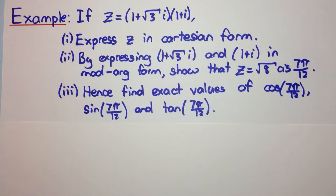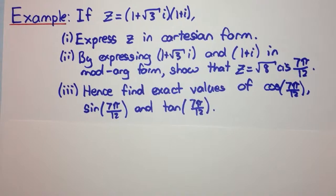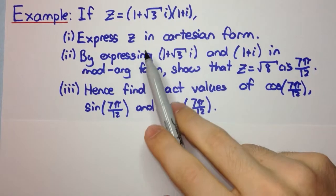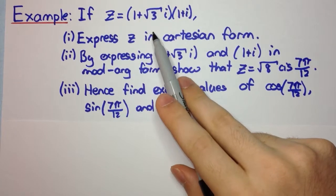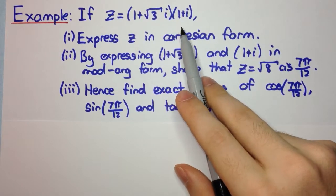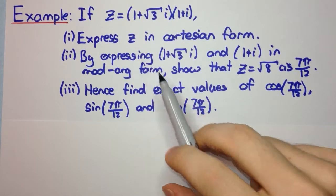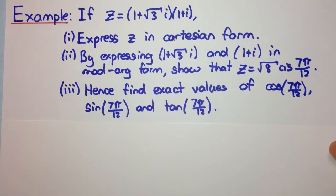Welcome to another example of mod-arg form of a complex number and its applications. If z equals (1 + √3i)(1 + i), express z in Cartesian form.